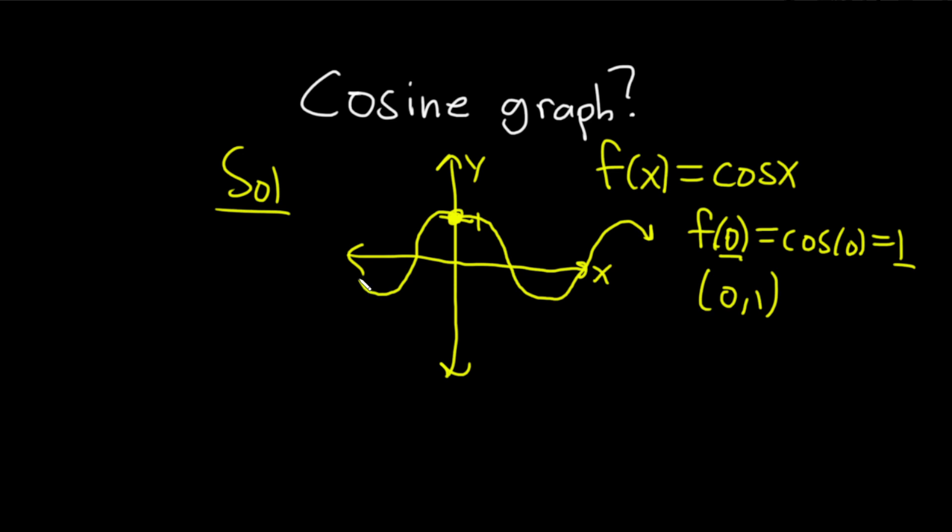Same thing here, crosses at negative π/2, comes back up, crosses at negative π and also at π. This is 1 and this is negative 1.